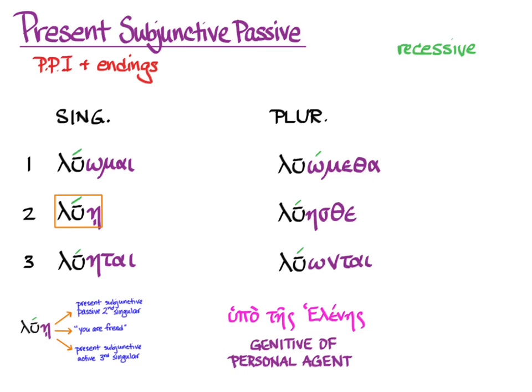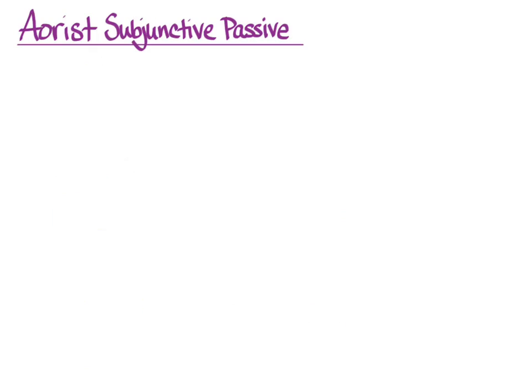Use the genitive of agent to specify who's doing the action if you need to. The aorist subjunctive passive comes, as all things aorist and passive do, from the sixth principal part, and then we'll have endings.